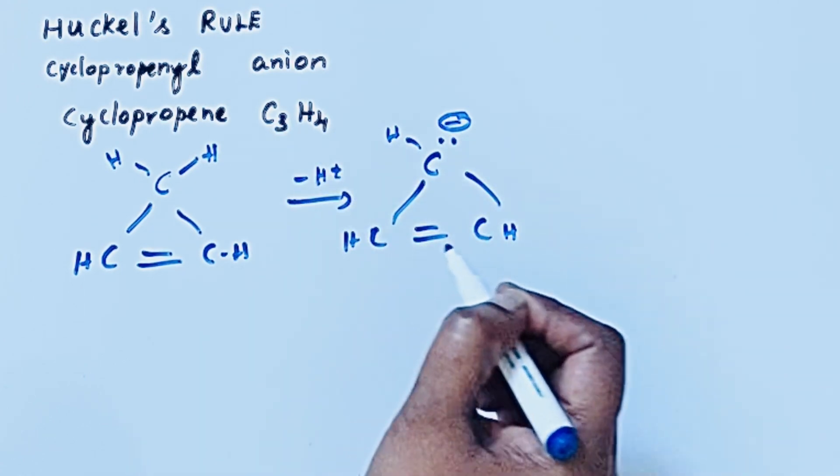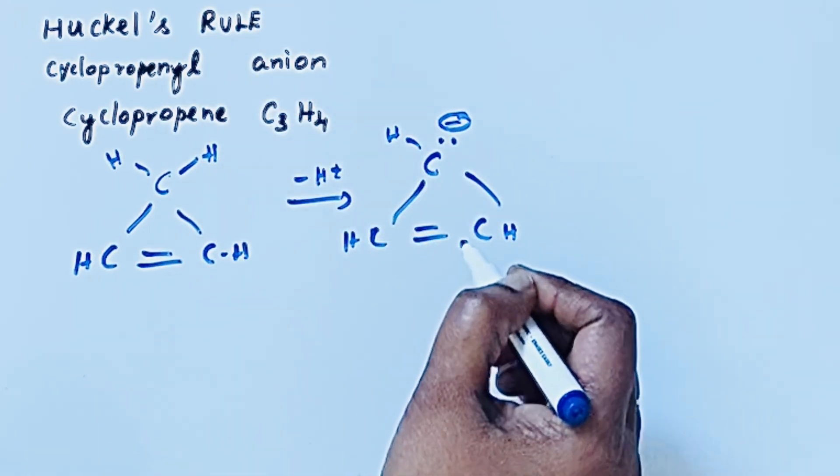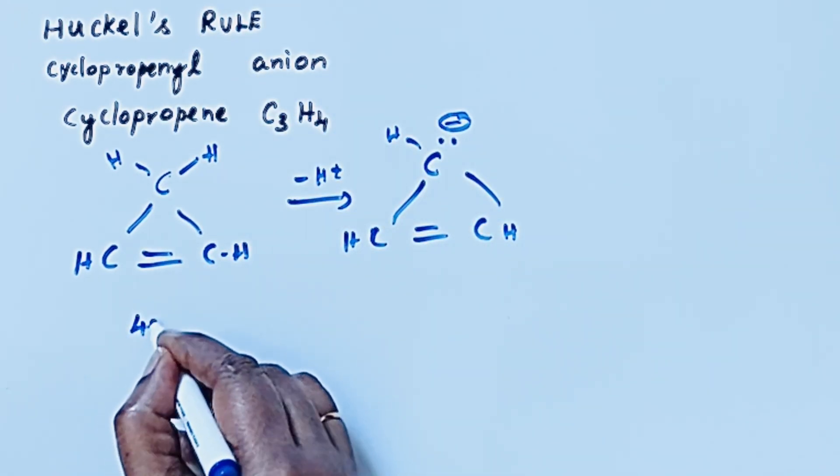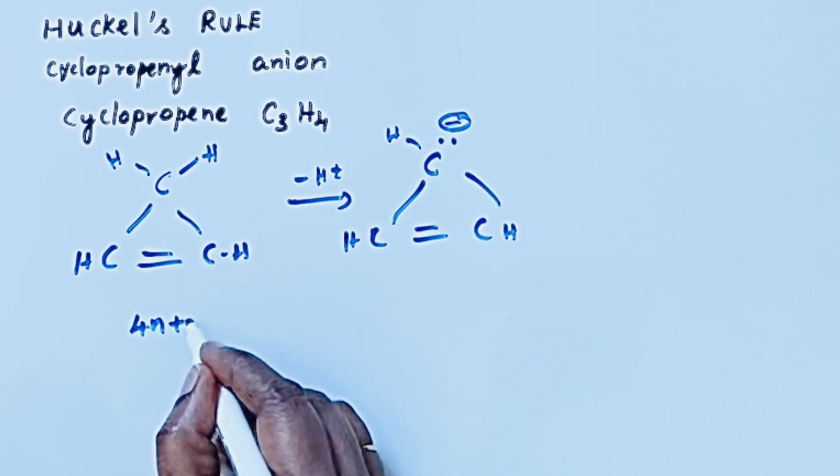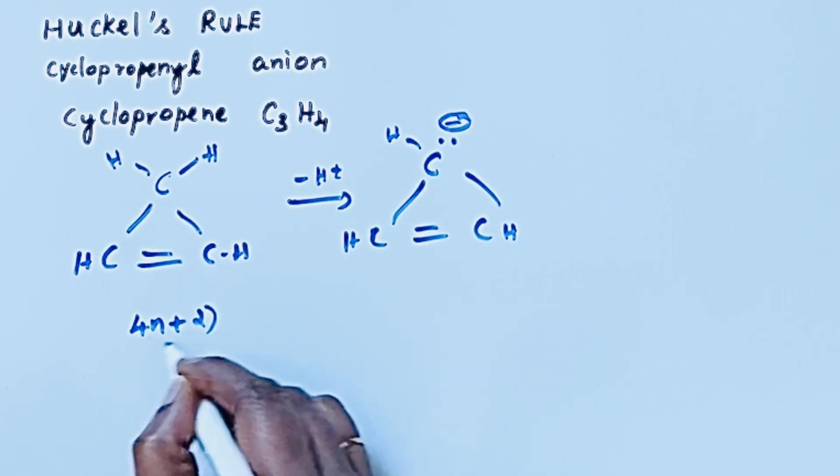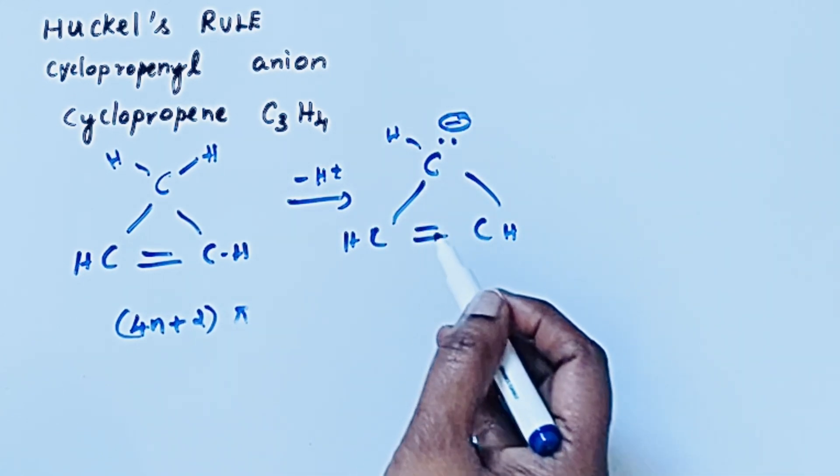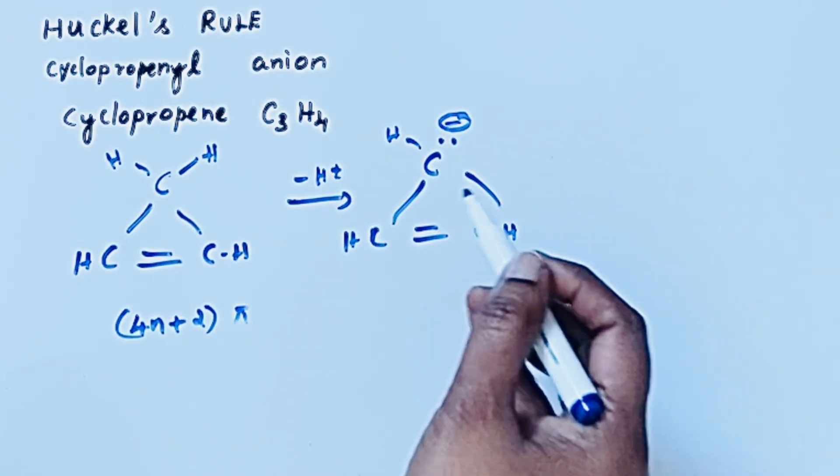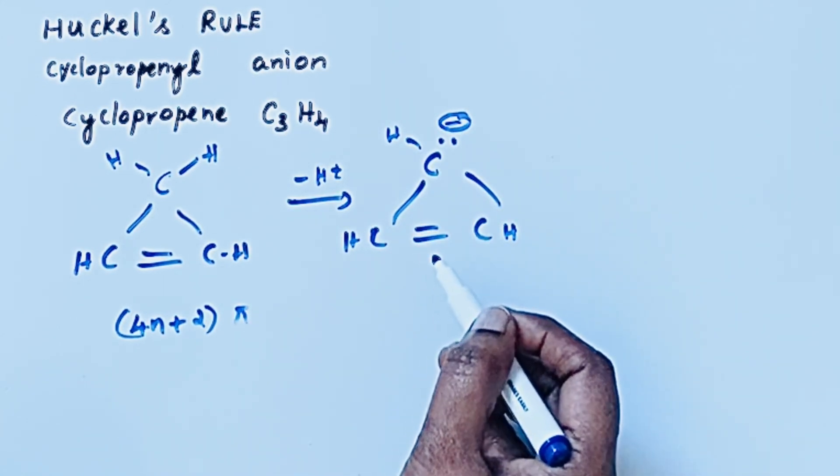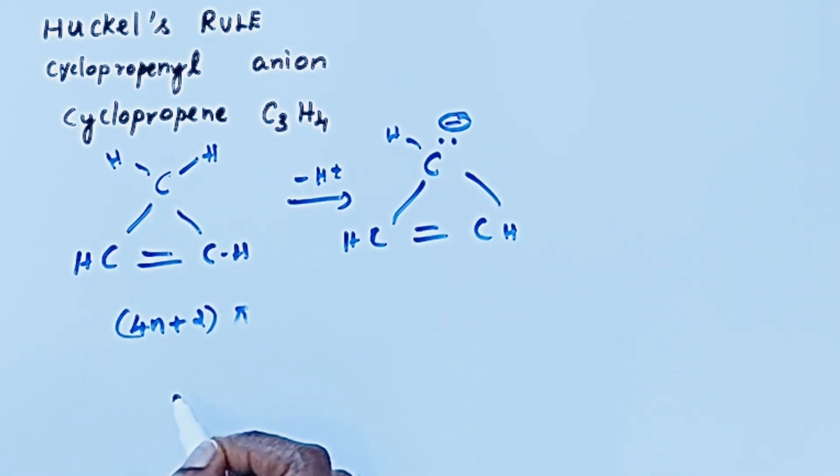So let us see whether it follows Huckel's rule or not. Huckel's rule says that if there is the presence of 4N plus 2 pi electrons then the compound is aromatic. Whether it is cyclic or planar or it has the conjugated system, it should possess the 4N plus 2 pi electrons.